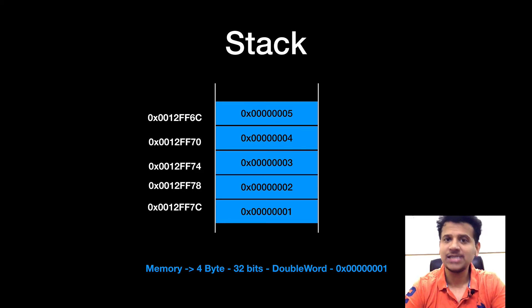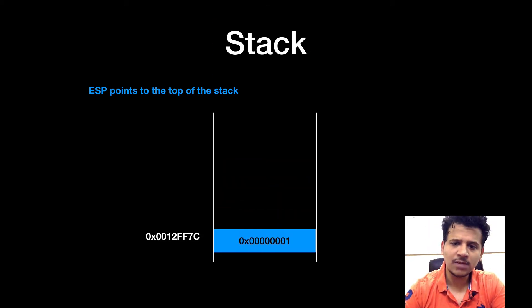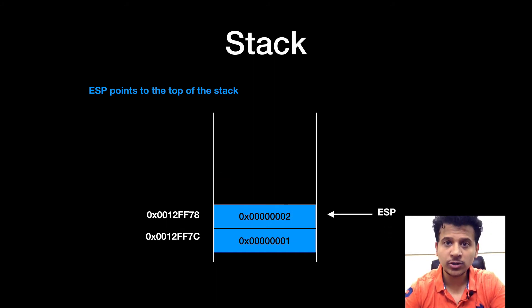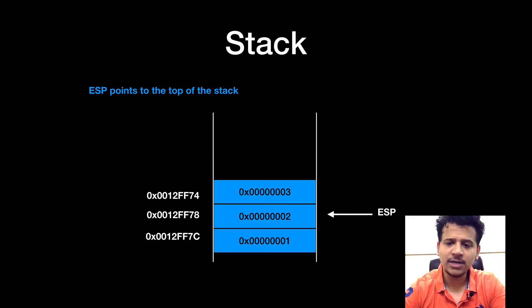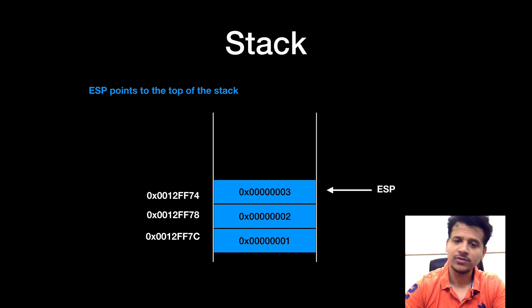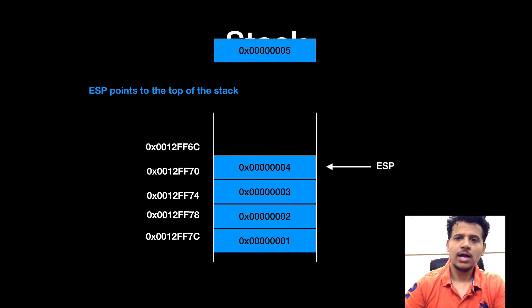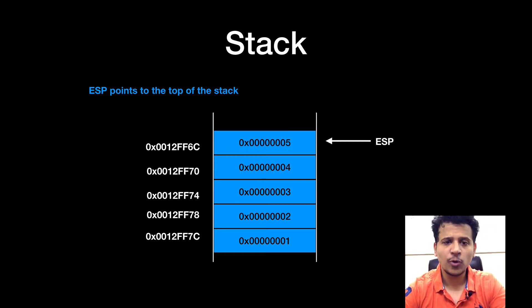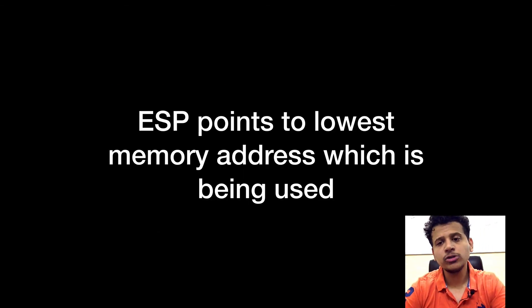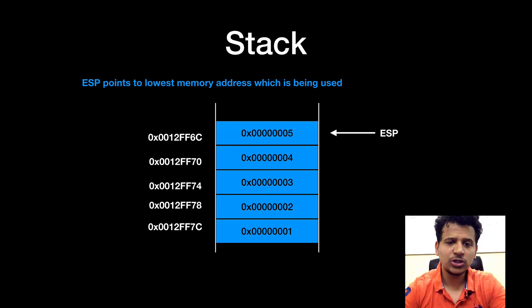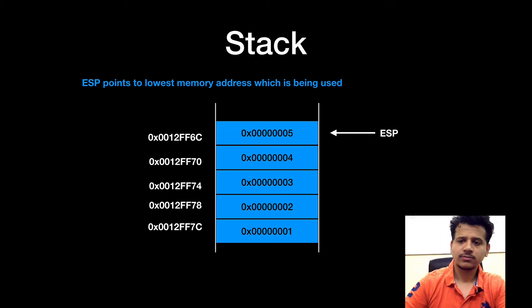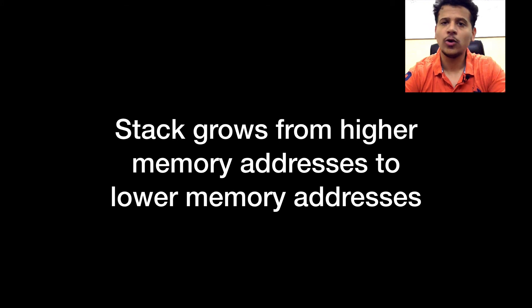The 0x prefix means it is a hexadecimal number. ESP always points to the top of the stack. After adding the first element, ESP is pointing at 0012FF7C. After the second element, ESP is pointing to 0012FF78. After the third, ESP is pointing at 0012FF74. After the fourth, ESP is pointing to 0012FF70. After the fifth element, ESP is pointing to 0012FF6C. So ESP always points to the top of the stack, which is the lowest memory address currently in use. That means the stack grows from higher memory addresses to lower memory addresses.